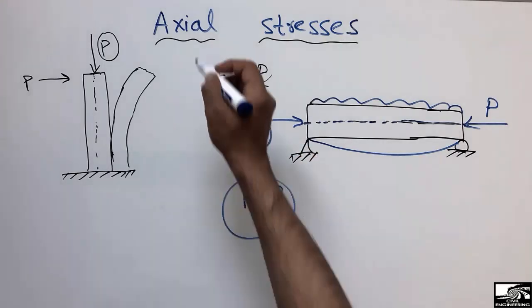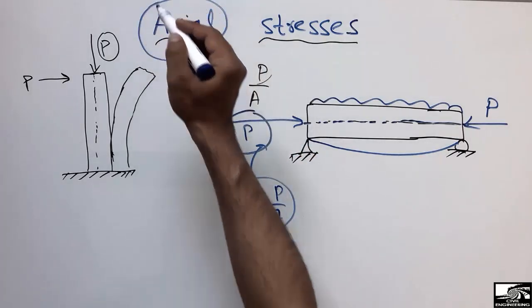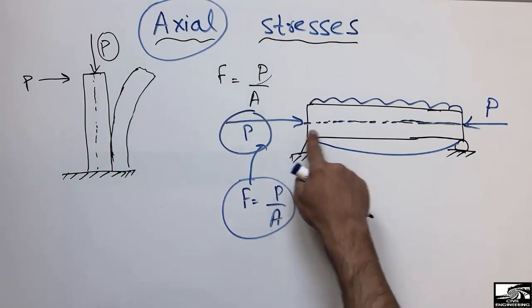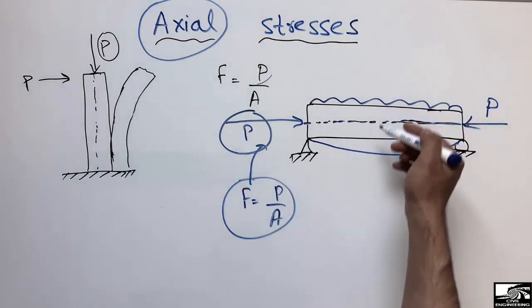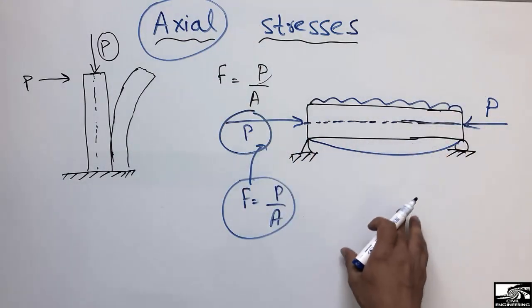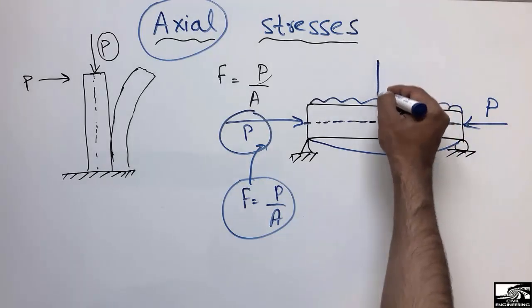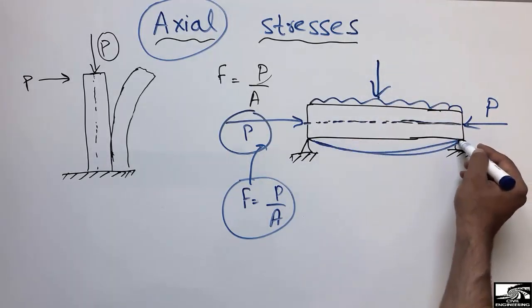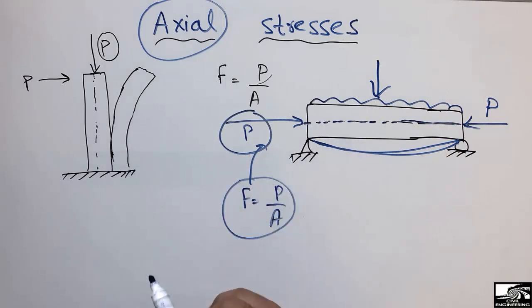So it means that axial stresses are always along the axis of the member, while the perpendicular load creates stresses which are known as flexural stresses. Due to this load we will have bending and flexural stresses, while along the axis we will only have axial stresses.